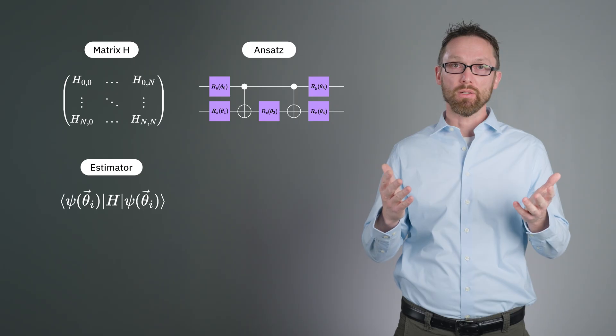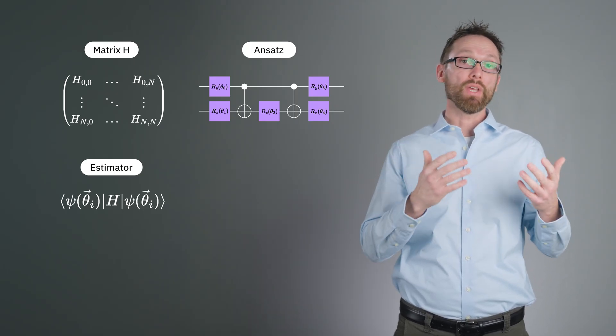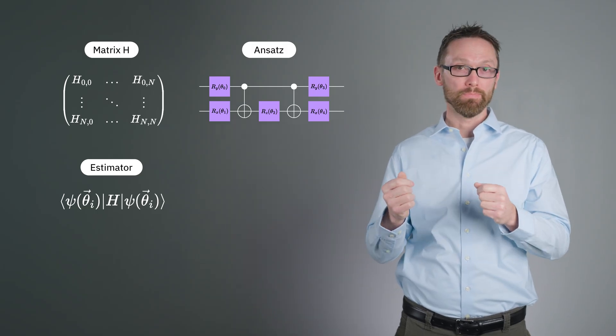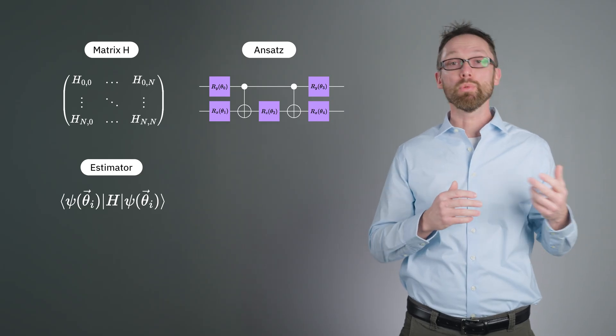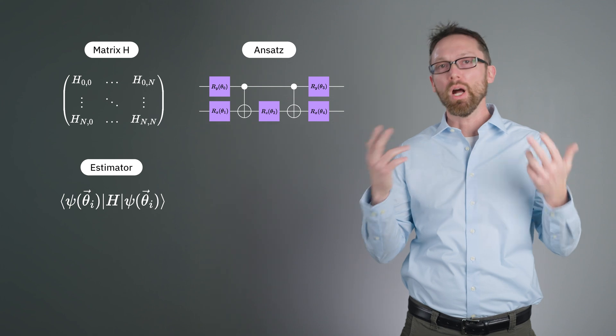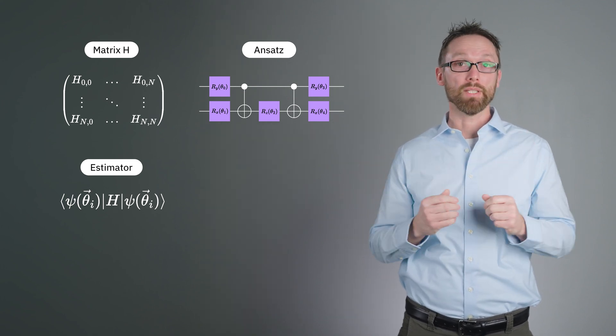Next, we need an estimator, a means of estimating the expectation value of the operator H over the current variational quantum state. Sometimes, what we really care about is simply this expectation value, which we call a cost function. Other times, we care about a more complicated function that can still be written starting from one or more expectation values.